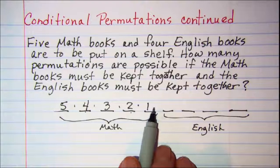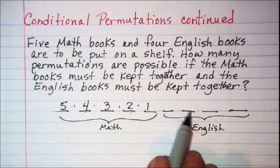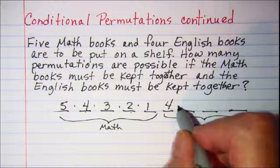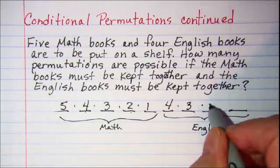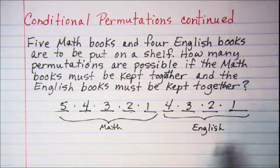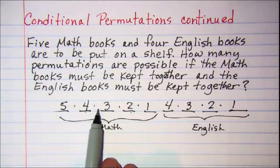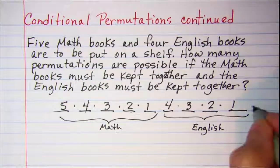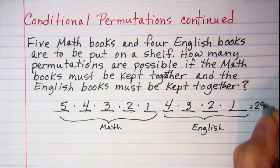Then next to this math book I have four ways to pick my English book. And then three ways and then two ways and then one way. So if we do the math here we can see that we get 2,880.